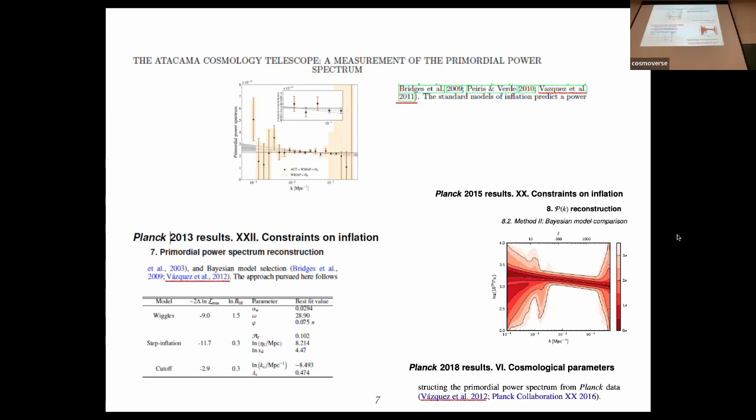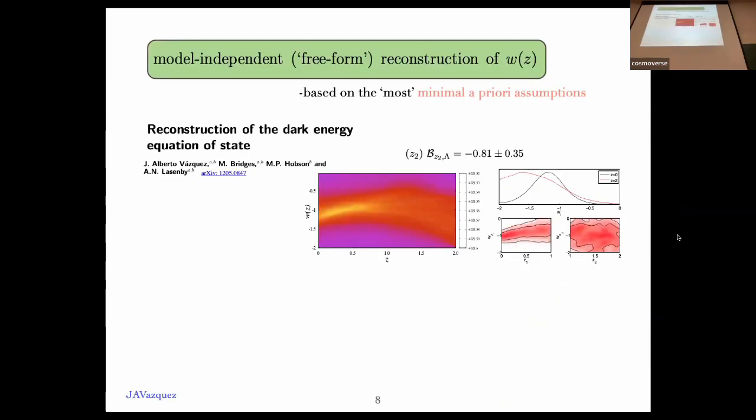We decided to apply a similar technique to the reconstruction of the equation of state. The Harrison-Zeldovich is analogous to the cosmological constant. The first step was to see whether the cosmological constant was preferred or ruled out. If we're optimistic, we can see a small deviation in the equation of state. It's a little bit less than minus one. Of course, we had at that time very old data sets like Union 2, but the technique was already working.